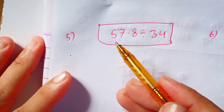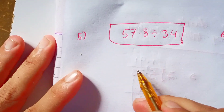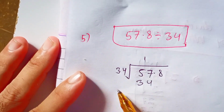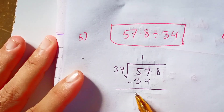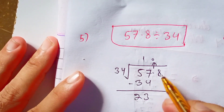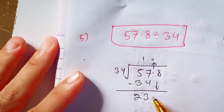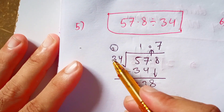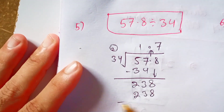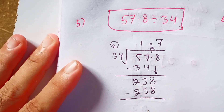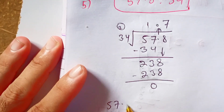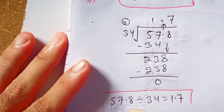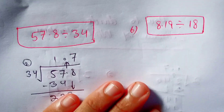Now here is another example: 57.8 divided by 34. 34 times 1 is 34. Subtract 34 from 57, the remainder is 23. Carry the decimal point to the quotient and bring down the 8 near 23 to make it 238. 7 times 4 is 28, write 8 and carry 2. 7 times 3 is 21 plus 2 is 23. Subtract 238 from 238, the remainder is 0. So 57.8 divided by 34 is equal to 1.7.